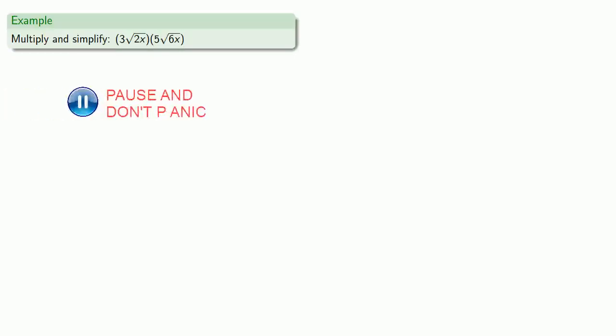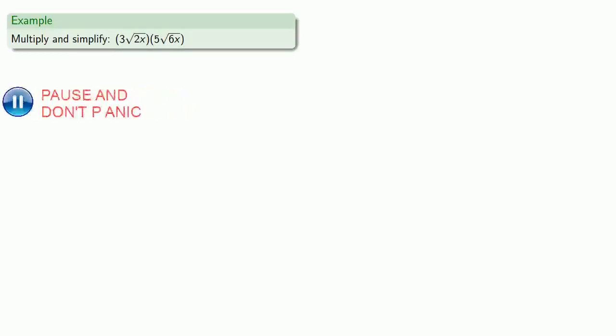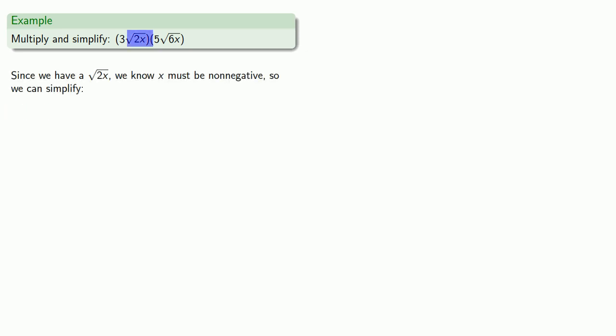Let's multiply and simplify this expression. We begin by noticing that since we have a square root of 2x, x itself must be non-negative, and so we can simplify. We rearrange the factors — putting all of the things outside the square root together, the 3 and the 5, and putting the square roots together: square root of 2x times square root of 6x.